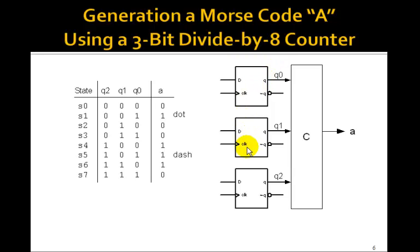So we have a 3-bit counter and the outputs Q0, Q1, Q2 go into this combinational logic circuit that produces A.